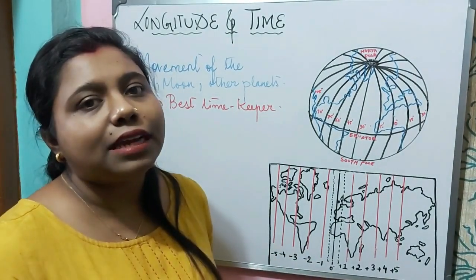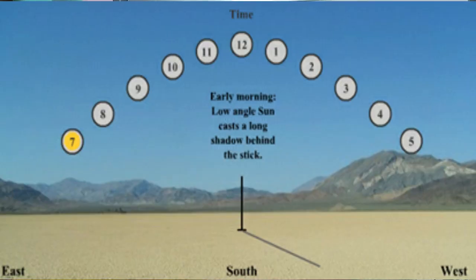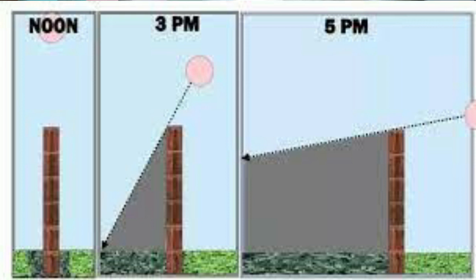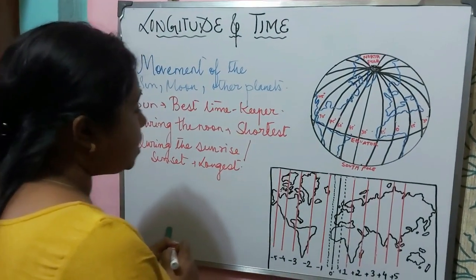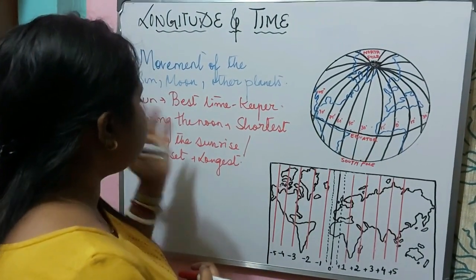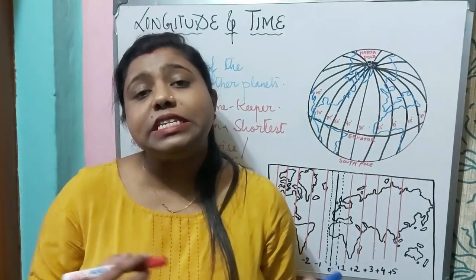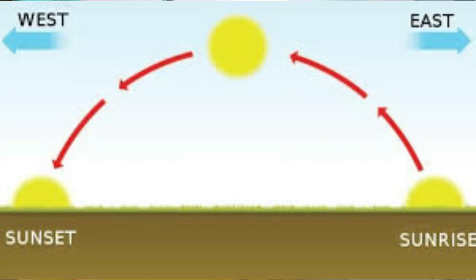The Sun casts shadows. During daytime, or during noon, the shadows are shortest, and during the morning — that is the time of sunrise and sunset — the shadows are longest. So on the basis of the shadow cast by the Sun during the day and at sunrise or sunset, we can determine what the time is.